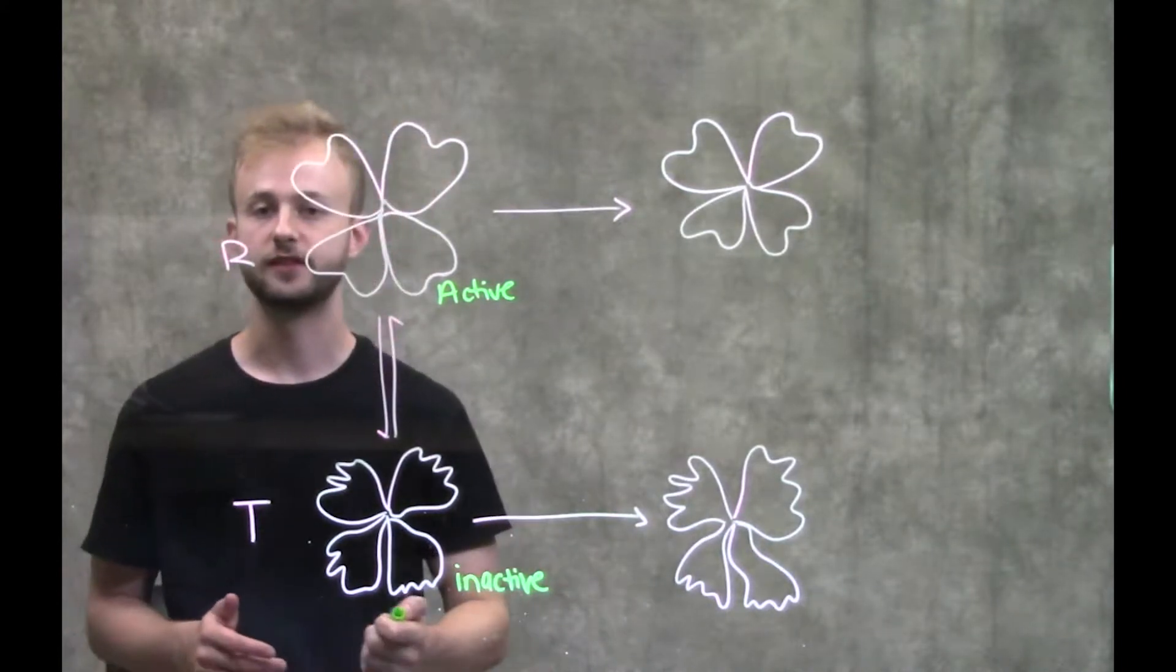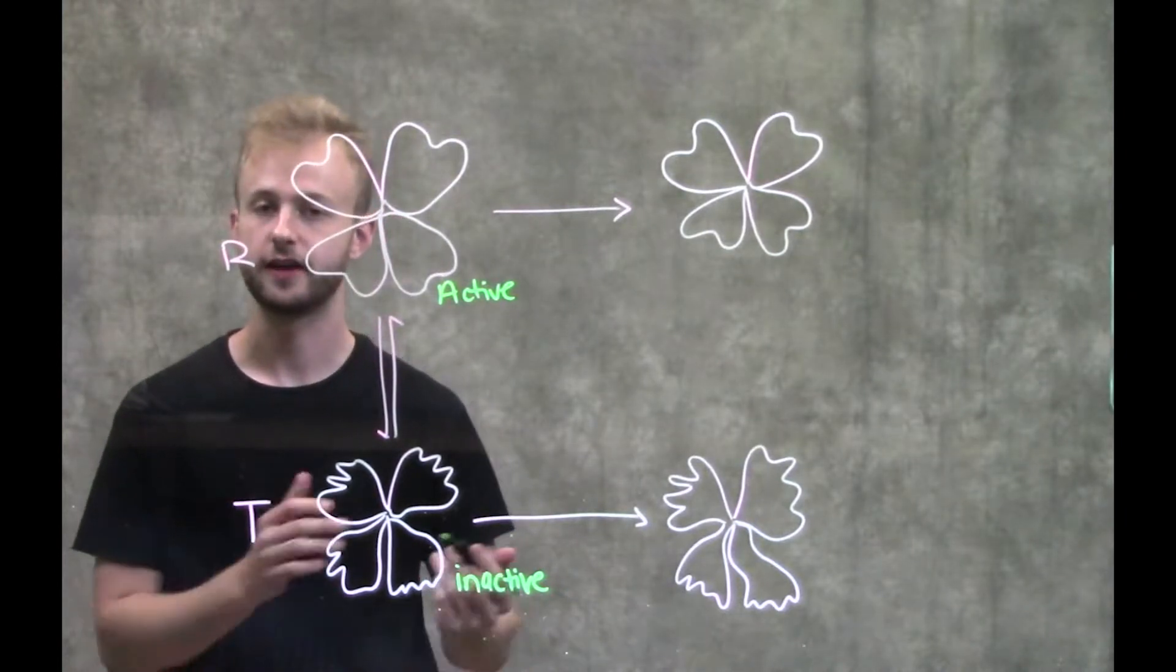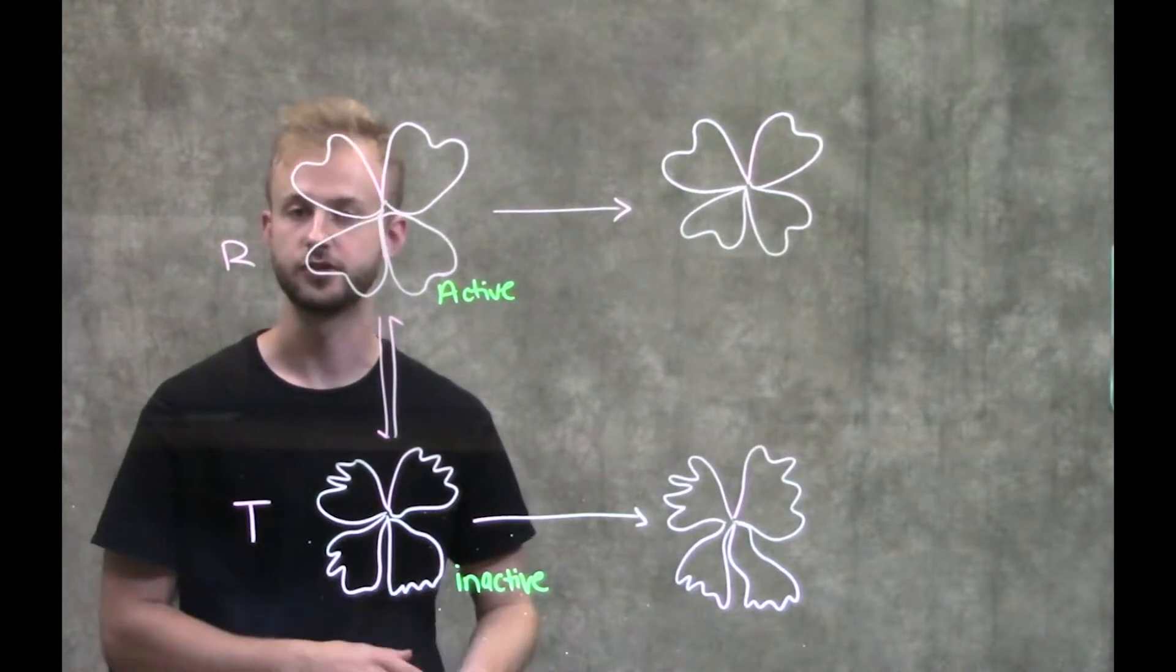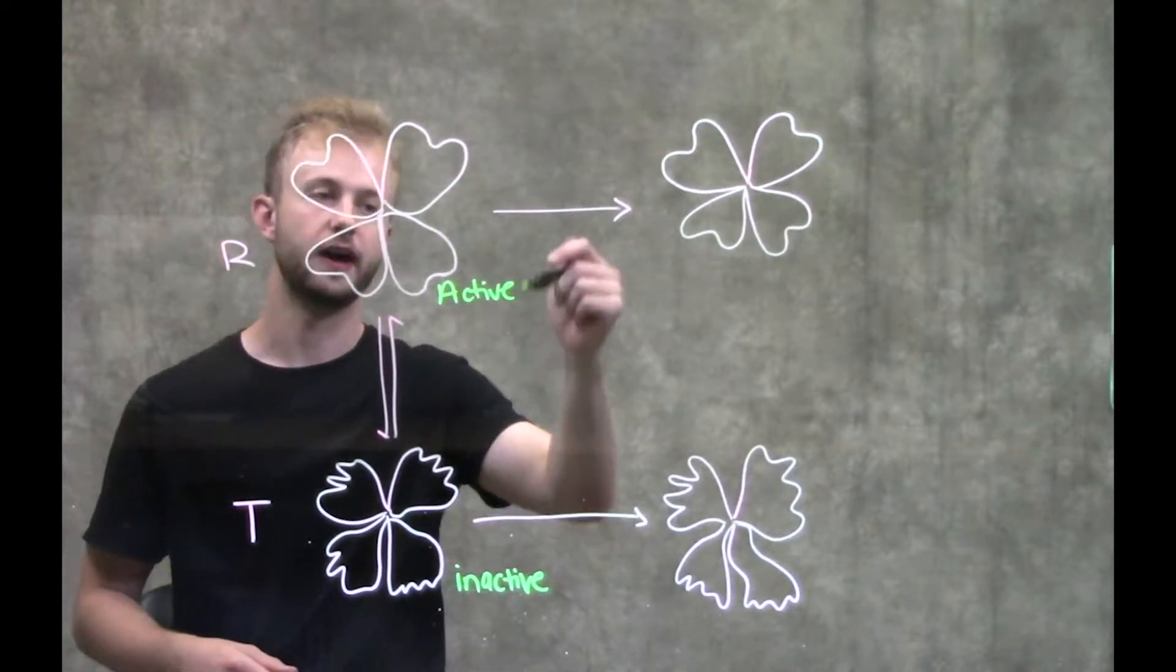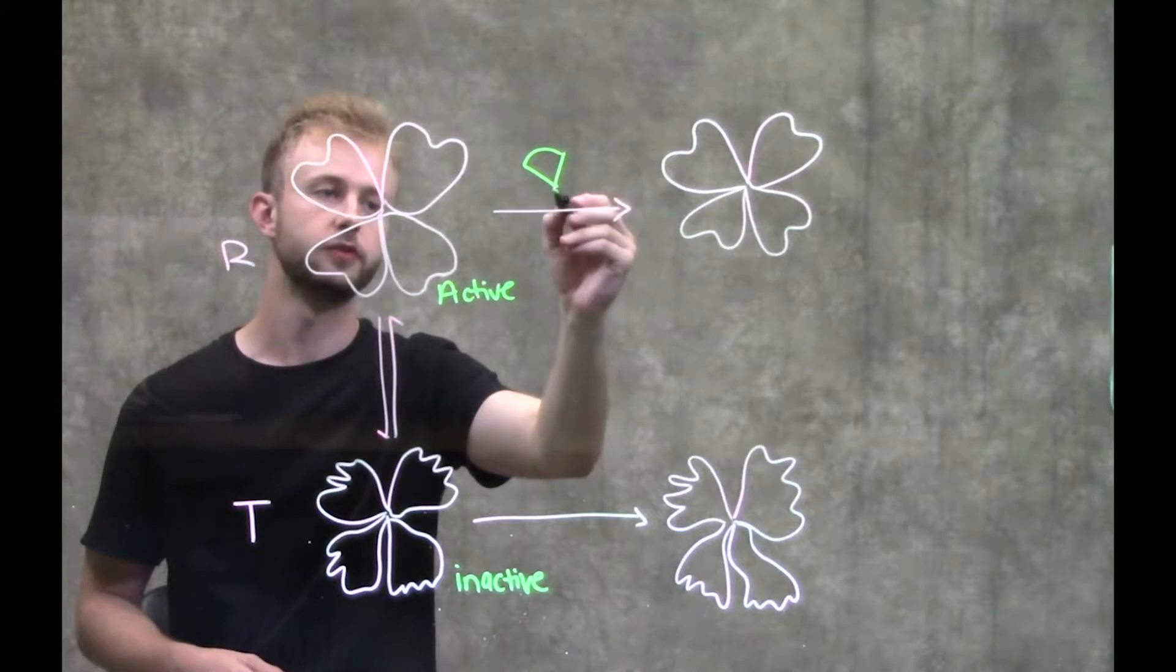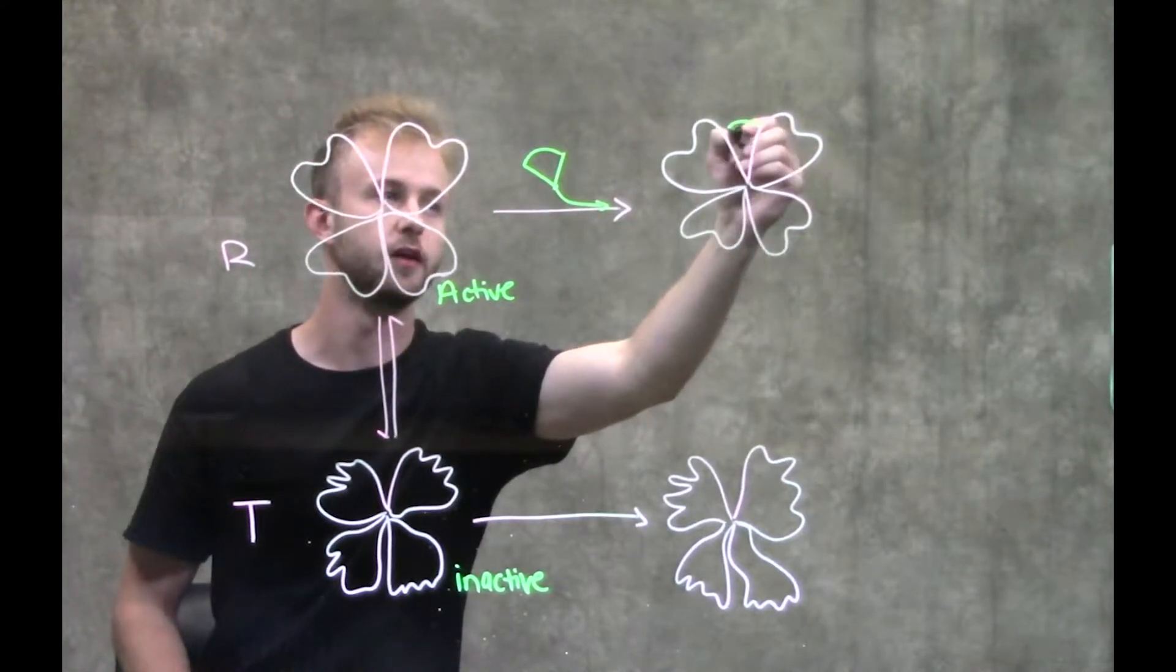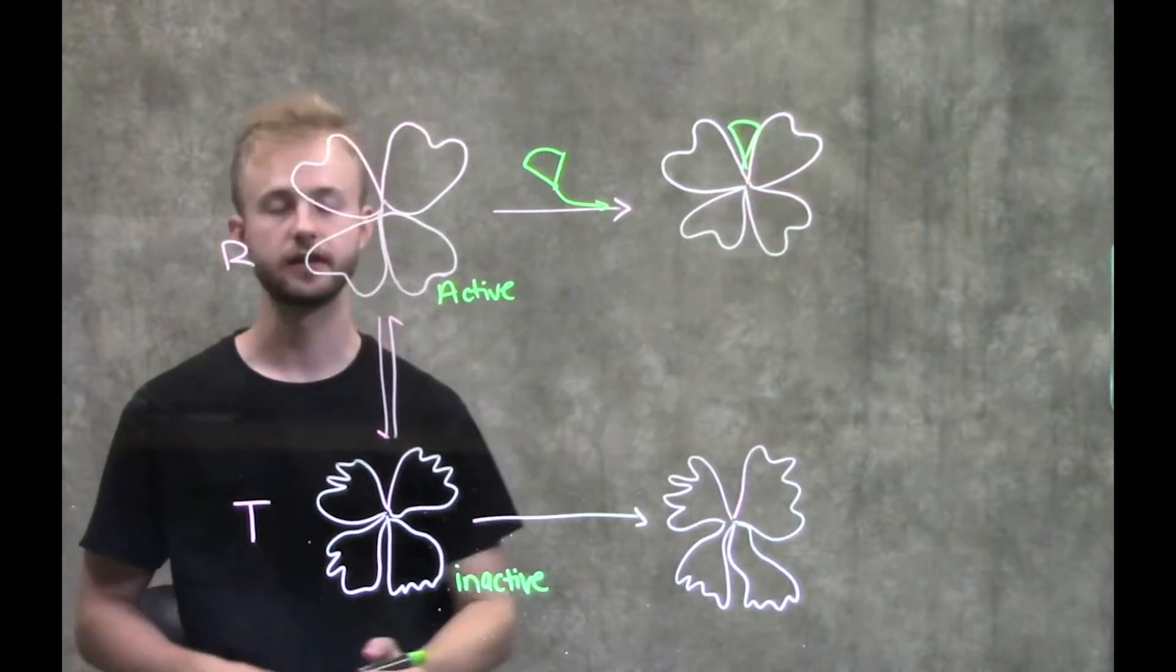Moving on to allosteric regulation, you have two kinds of allosteric regulation: allosteric activation and allosteric inhibition. For activation, what happens is you'll have an activator molecule that will come in and it will bind somewhere on the enzyme.